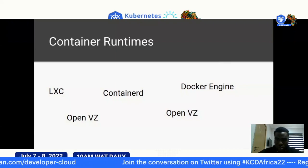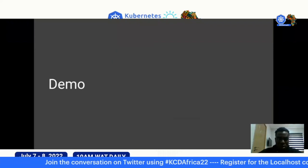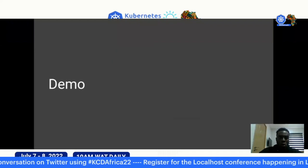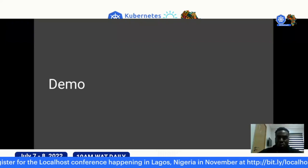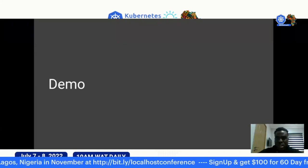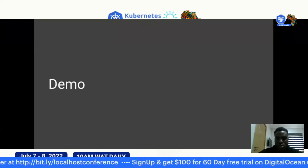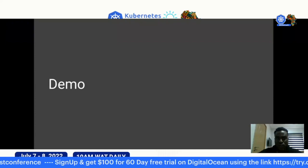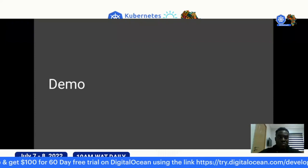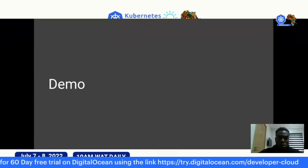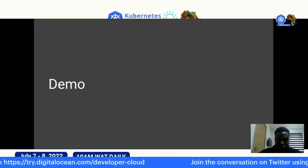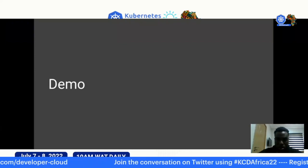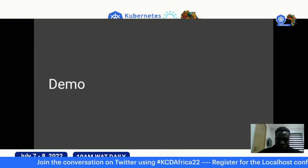We'll go ahead to a demo. For this demo, we'll look at creating a network namespace, and then test copy-on-write with a union filesystem.